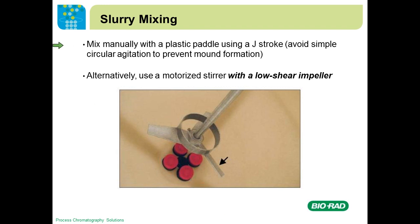For mixing the slurry, either mix manually with a plastic paddle using a J-stroke, or use a motorized stirrer. Avoid simple circular agitation, because this creates a mound of CHT at the bottom — similar to stirring undissolved salt in a glass. If you use a motorized stirrer, make sure you have a low shear impeller, such as a hydrofoil impeller. CHT particles, while withstanding a lot of pressure, are vulnerable to shear. A high shear impeller will damage particles and result in a column that is very hard to flow.